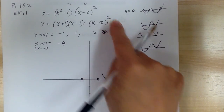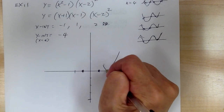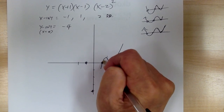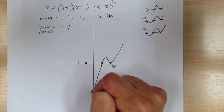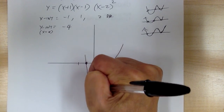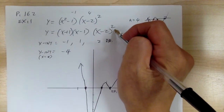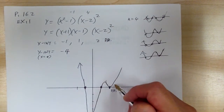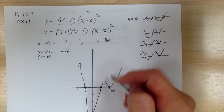When it's an even power — like 2nd or 4th — the graph will not go through that intercept; it will touch and bounce back. Only an odd power, like 1, 3, or 5, will cause the graph to go through. So that's your sketch for example 1.